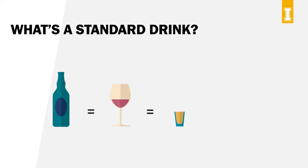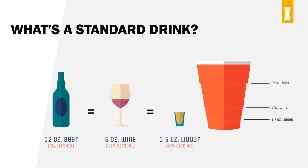The standard drink is a unit of measurement of pure alcohol across different alcoholic beverages. Standard drinks help us keep track of how much alcohol a person consumes so they can track how intoxicated it makes them. Each standard drink has 14 grams of pure alcohol. The standard drink of beer is 12 ounces, 5 ounces for wine, and 1.5 ounces for liquor. The more pure alcohol in a beverage, the smaller the drink becomes to maintain that standard drink measurement.